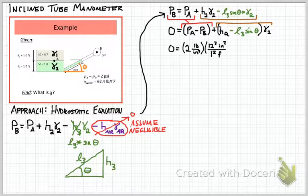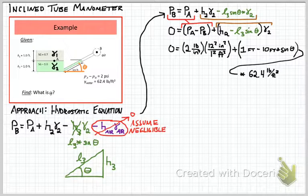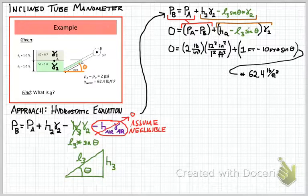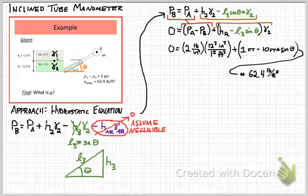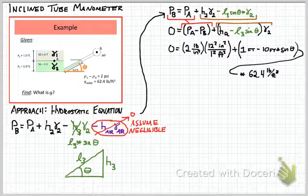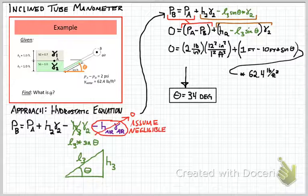Now, substituting values given for the variables that we've calculated and running out of room, putting the 62.4 pounds per cubic foot on the next line that's multiplied by the quantity in parentheses. You've got a solvable equation now. So one equation and one unknown. You can solve that for theta. And I end up calculating a theta of about 34 degrees for this problem.